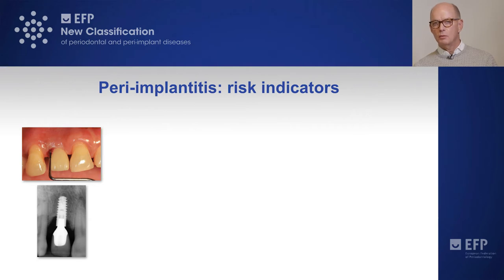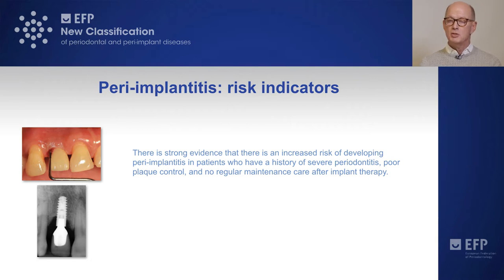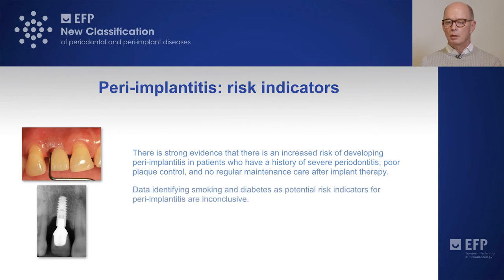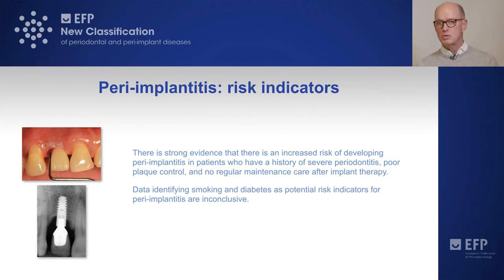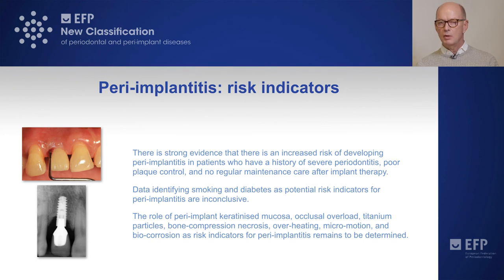In peri-implantitis, we have also identified risk indicators. There is strong evidence that there is an increased risk of developing peri-implantitis in patients who have a history of severe periodontitis, poor plaque control, and no regular maintenance care after implant therapy. Data identifying smoking or diabetes as potential risk indicators for peri-implantitis are however inconclusive. On the same line, the role of peri-implant keratinized mucosa, occlusal overload, titanium particles, bone compression necrosis, overheating, micromotion, or biocorrosion as potential risk indicators for peri-implantitis still remains to be determined.